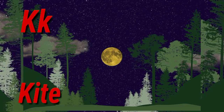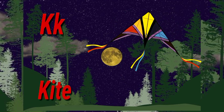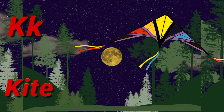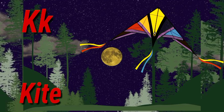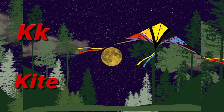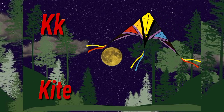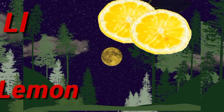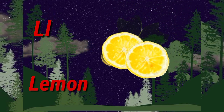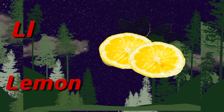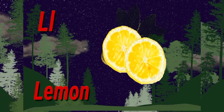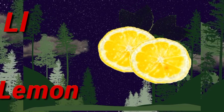K. K for kite. Kite means patang. L. L for lemon. Lemon means nimbu.